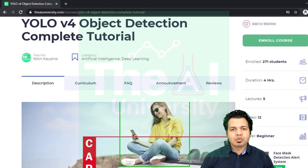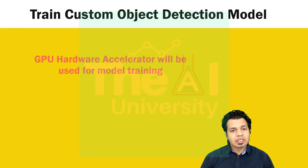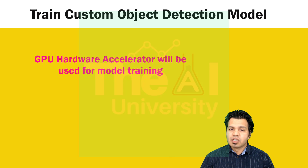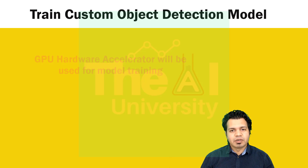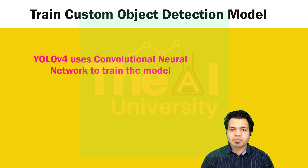We are going to use a GPU hardware accelerator so that the deep learning model can get trained in a faster manner. One of the other reasons for using Google Colab is that a lot of dependencies get fulfilled automatically when we try to train our model here. As I explained earlier, YOLO uses a convolutional neural network to train these models, so we need a GPU machine for that purpose.